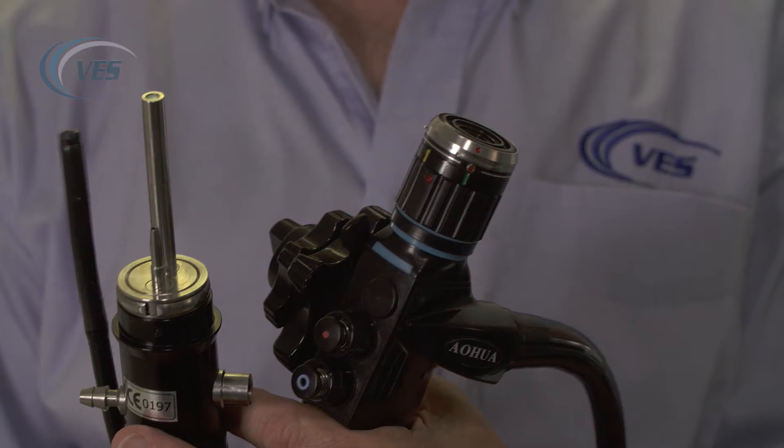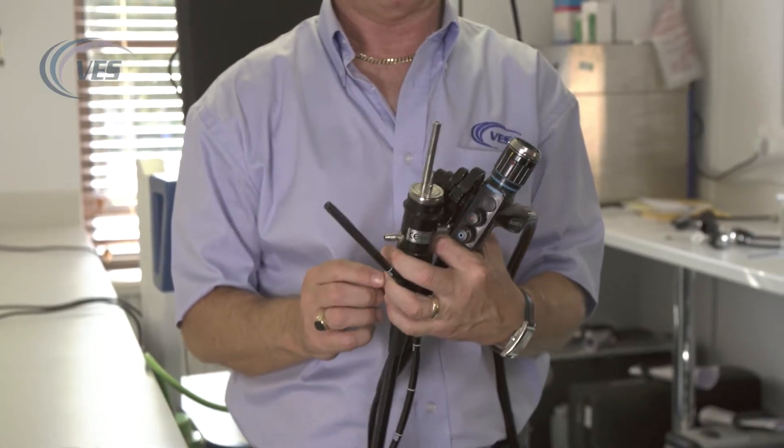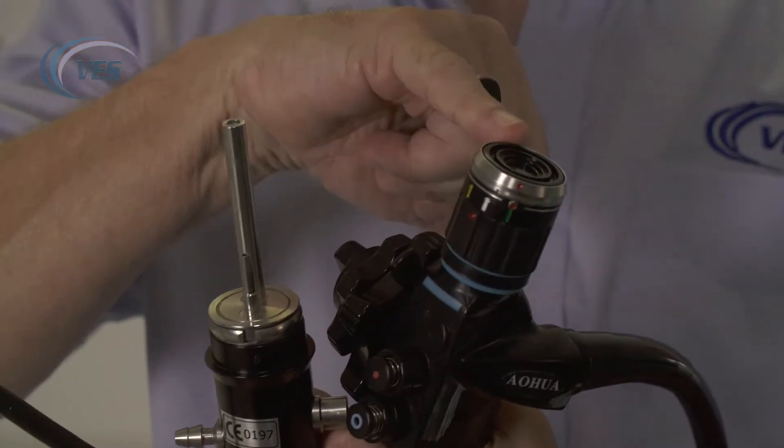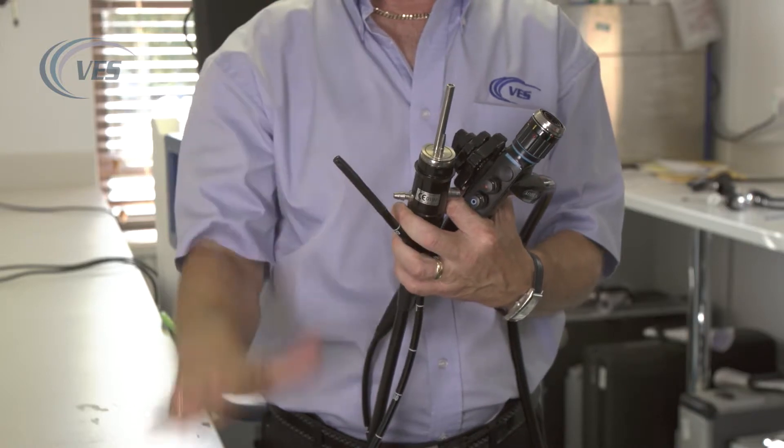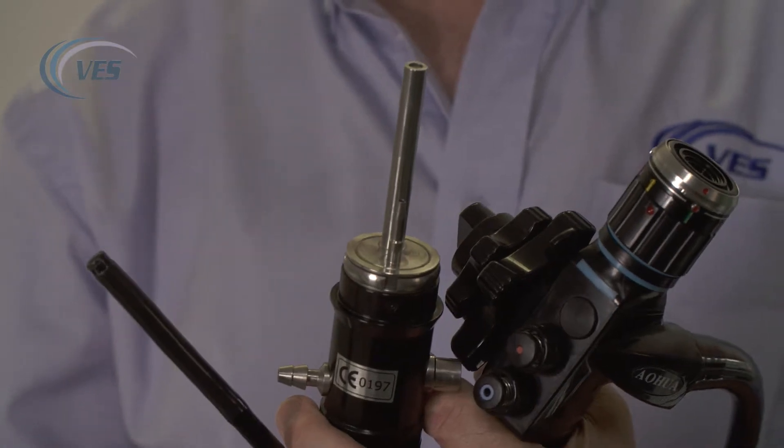Your main danger areas of any scope are going to be anywhere where there is glass and metal. That is, your distal tip, your light guide post, and your eyepiece. Avoid dropping or hitting any of these parts on a hard surface or table.